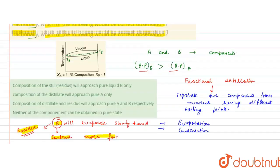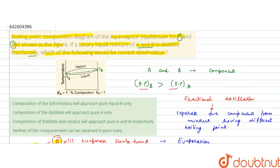So the correct observation for this question is: the composition of the residue will approach pure liquid B, and the distillate approaches pure A. So option C is correct — distillate approaches pure A and residue approaches pure B. I hope you understood the solution. Thank you.